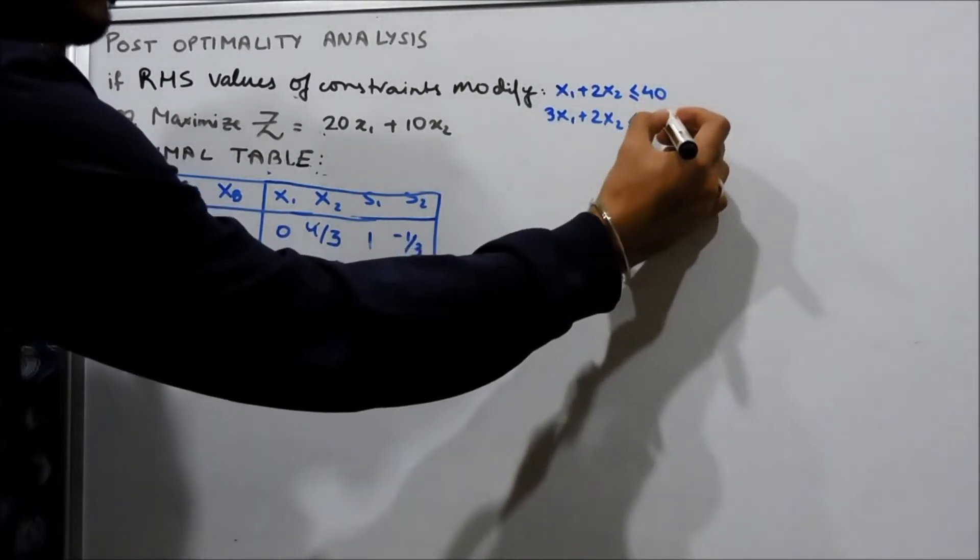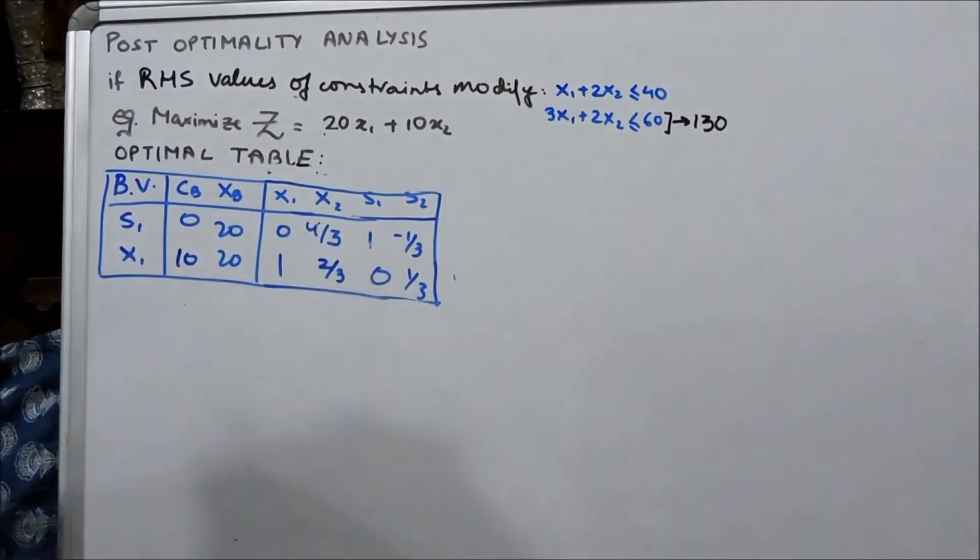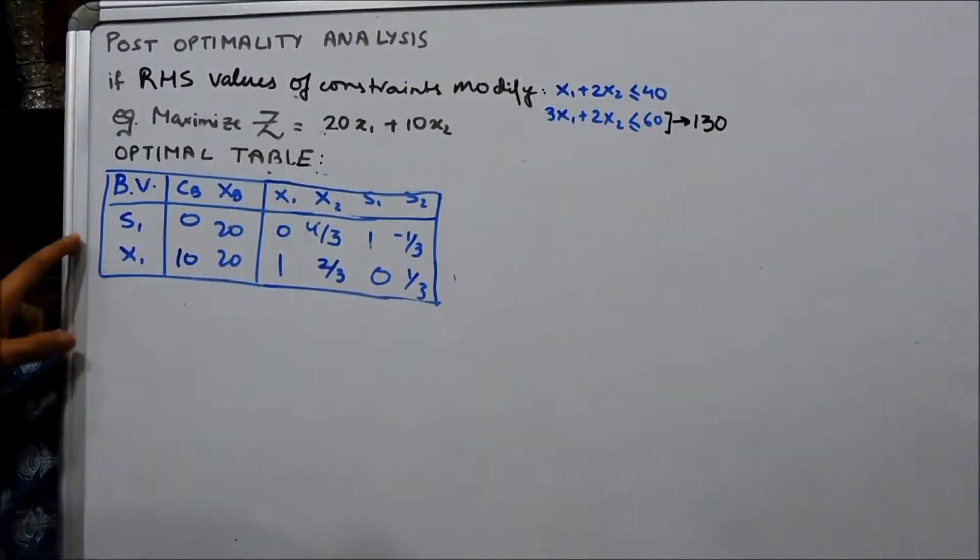Suppose that this 60 changes to 130. Now, this is the optimal table. In the optimal table, there is no change right now.